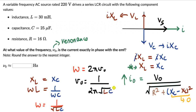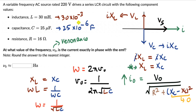Now we substitute the values. The inductance is 30×10⁻³ H (millihenry) and the capacitance is 25×10⁻⁶ F (microfarads). Substituting these into V₀ = 1/(2π√(LC)) and computing gives a resonance frequency of 183 Hz.